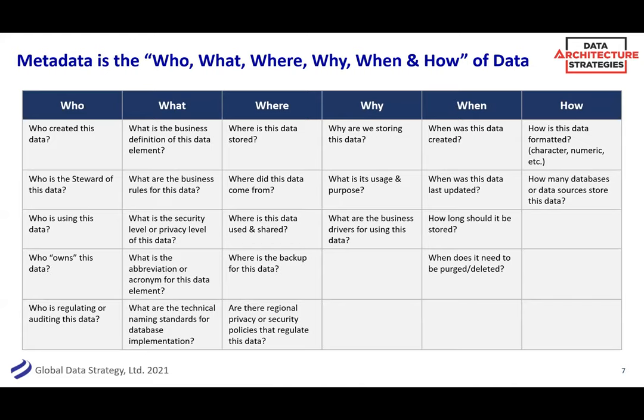Many of you have seen this matrix I've put together — it's sort of the Zachman framework of metadata: who, what, where, why, when, and how. In metadata, we often focus on the what — the business definitions, business context, business rules — but also the technical what: data types, etc. Who is super important as it relates to governance: who's the data steward, who's the owner, who's regulating it, who's auditing it, who are the business users? Where relates to data lineage, compliance — is it in Europe or the US? And there are certain stakeholders who that matters to.